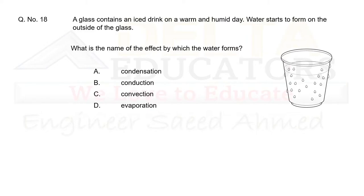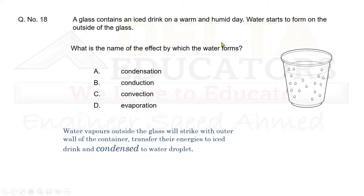Question 18: A glass contains an ice drink. On a warm and humid day, water starts to form on the outside of the glass. What is the name of this effect? Water vapour outside strikes the outer wall of the container, transfers energy to the cold surface, and condenses as water droplets. This effect is called condensation. Correct option is A.